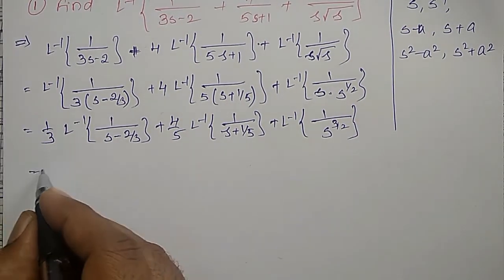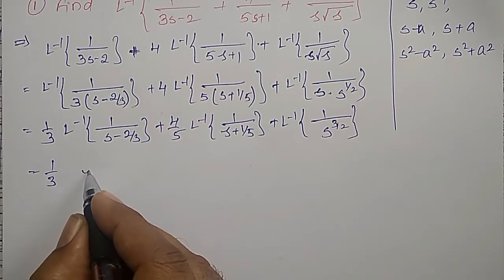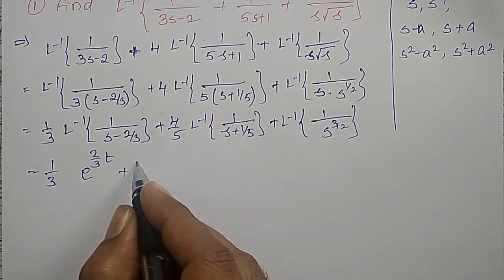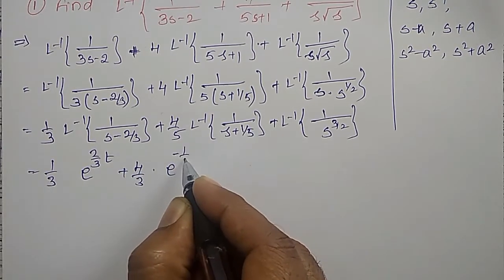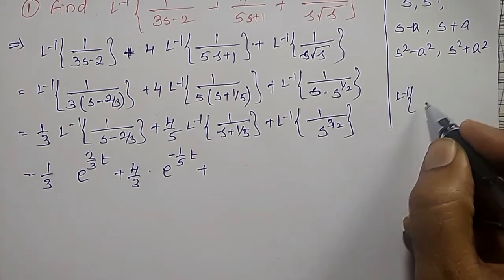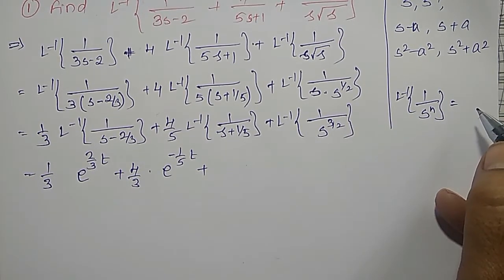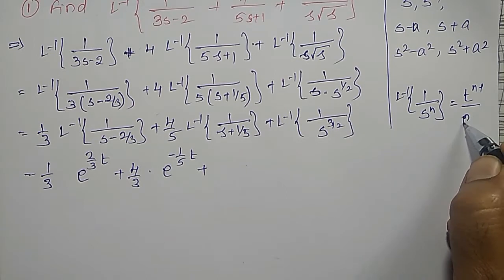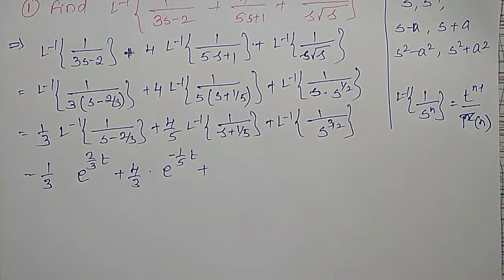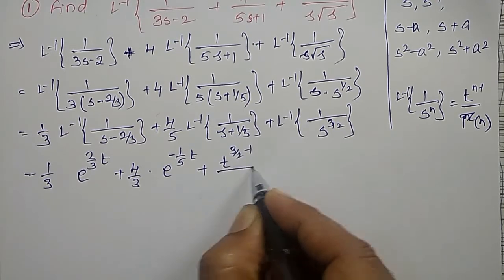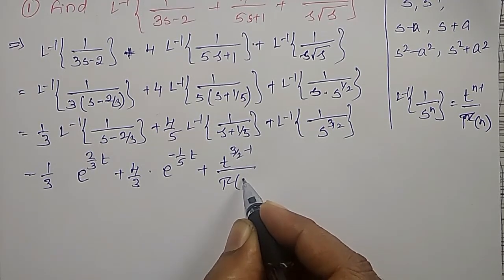Their inverse Laplace transforms: for the first term, 1/3 times e^(2t/3); for the second term, 4/5 times e^(-t/5). For the third term, inverse Laplace transform of 1/S^(3/2) uses the formula: inverse Laplace transform of 1/S^n = t^(n-1)/Γ(n). So it is t^(3/2 - 1) / Γ(3/2) = t^(1/2) / Γ(3/2).